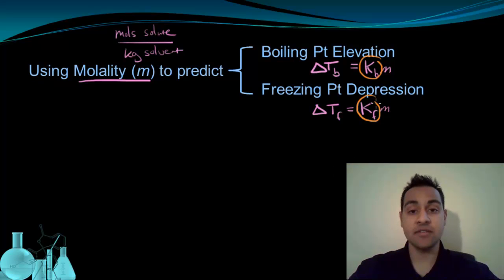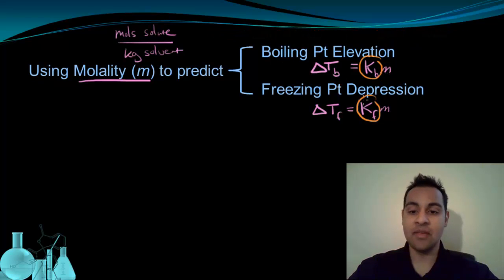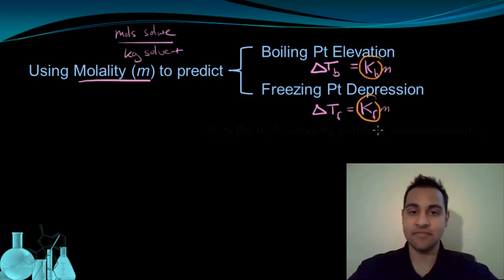And these are constants. Kb is called the molal boiling point elevation constant, because it's for boiling point elevation. And as you can imagine, Kf is the molal freezing point depression constant. Now it's important to note that both of these constants change depending on the substance. So the constants Kb and Kf are unique for each substance.